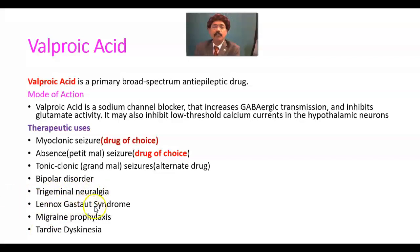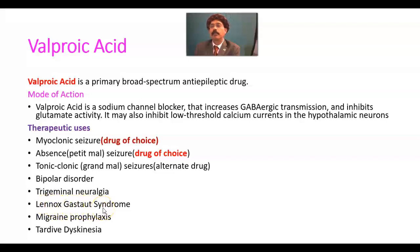Lennox-Gastaut syndrome — this is a childhood epilepsy that may be associated with cognitive dysfunction and tuberous sclerosis. Valproic acid is used here, especially after the age of two. It is also used for migraine prophylaxis.